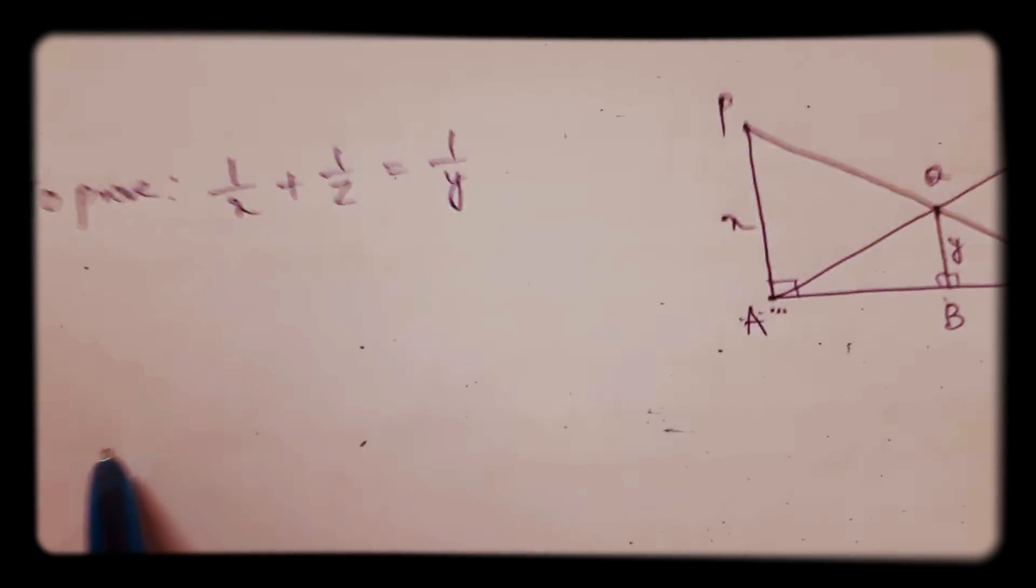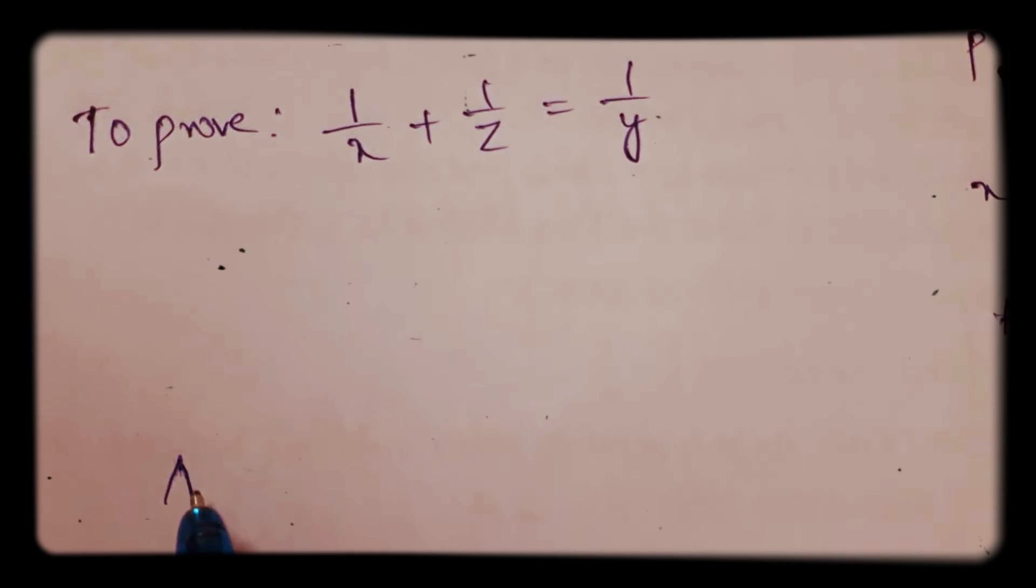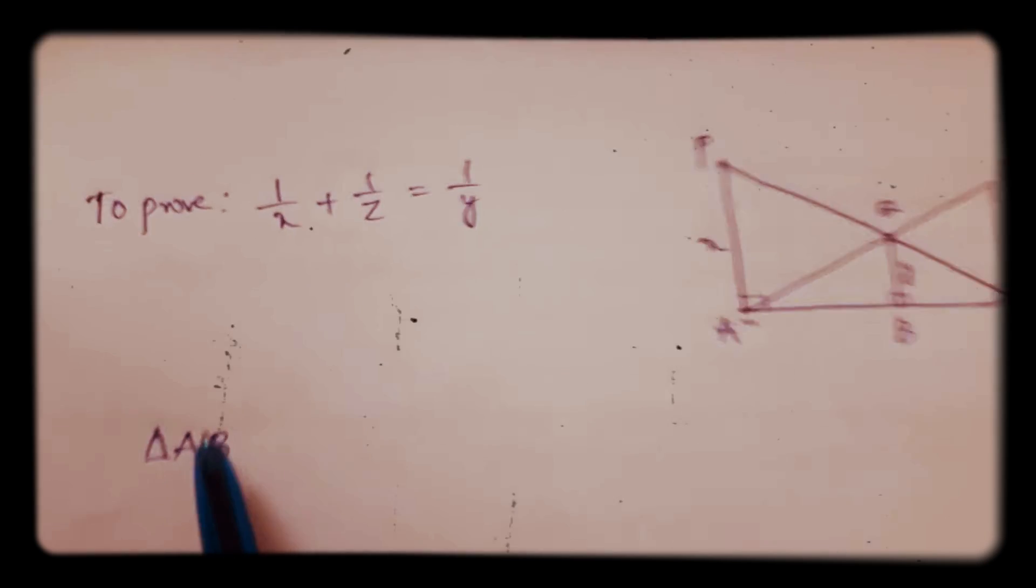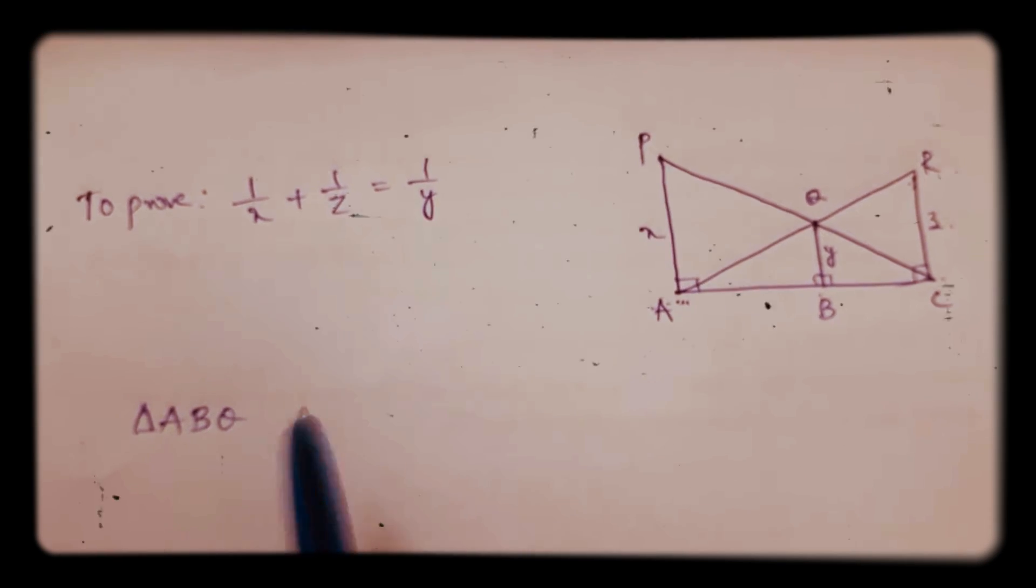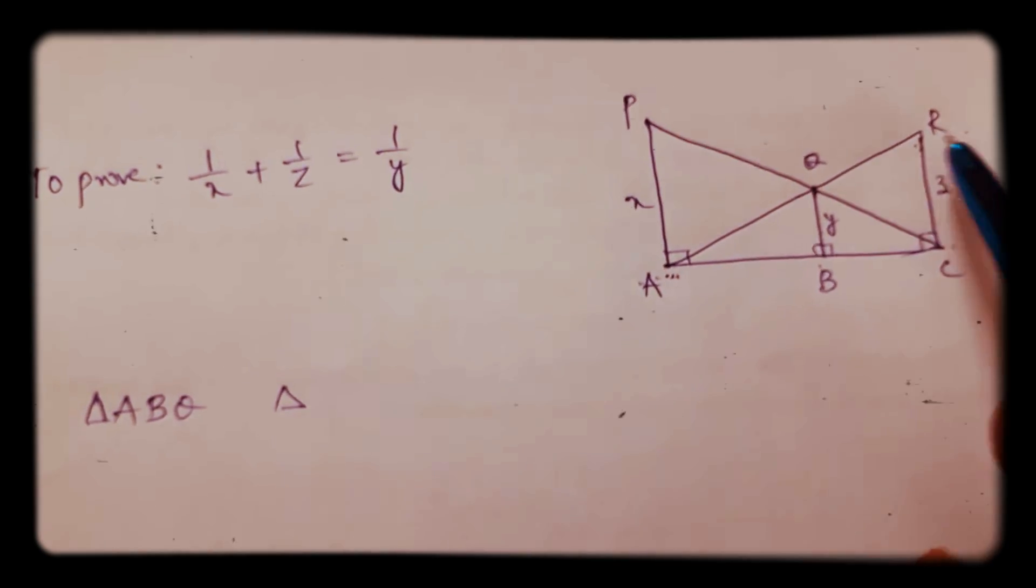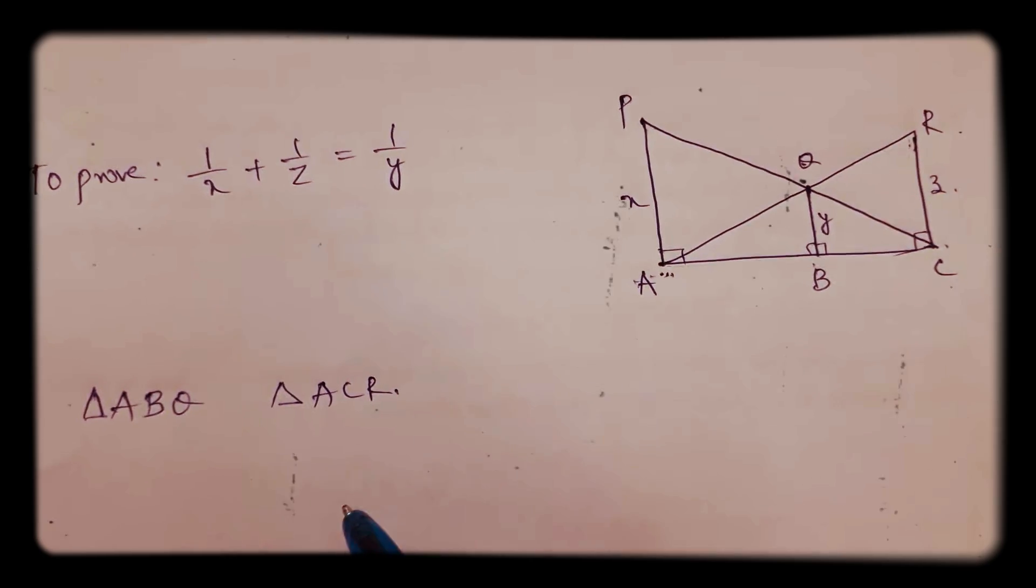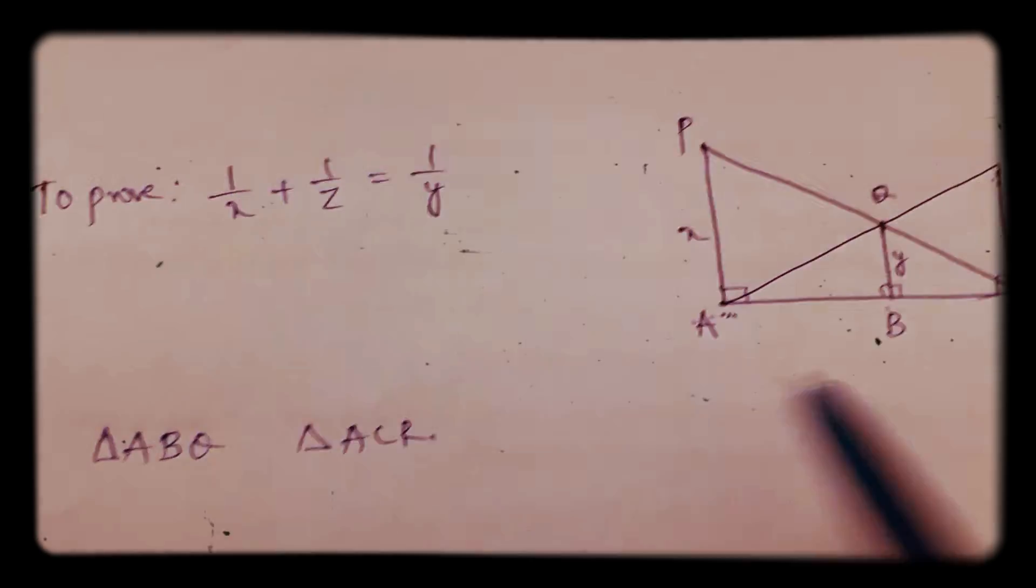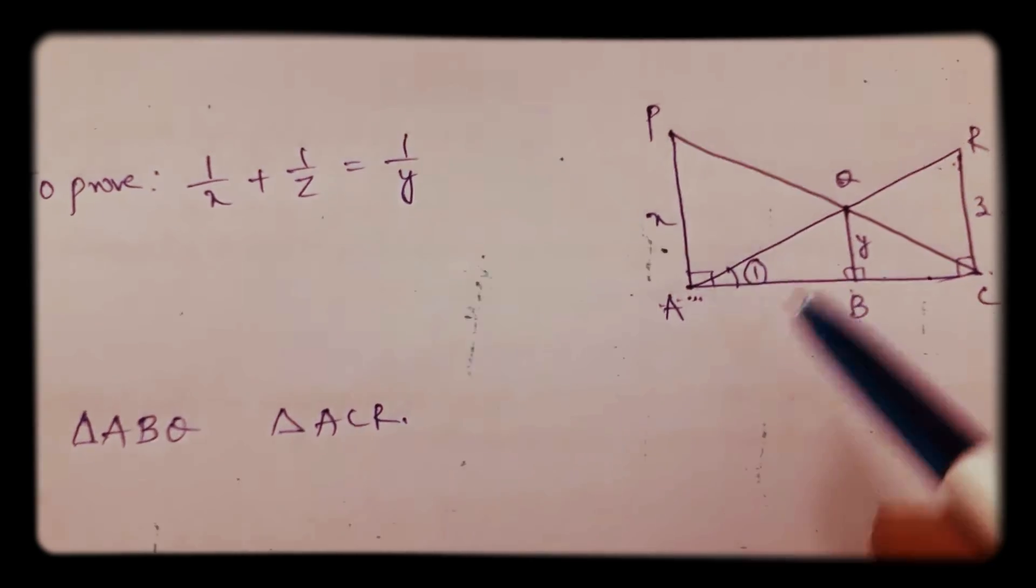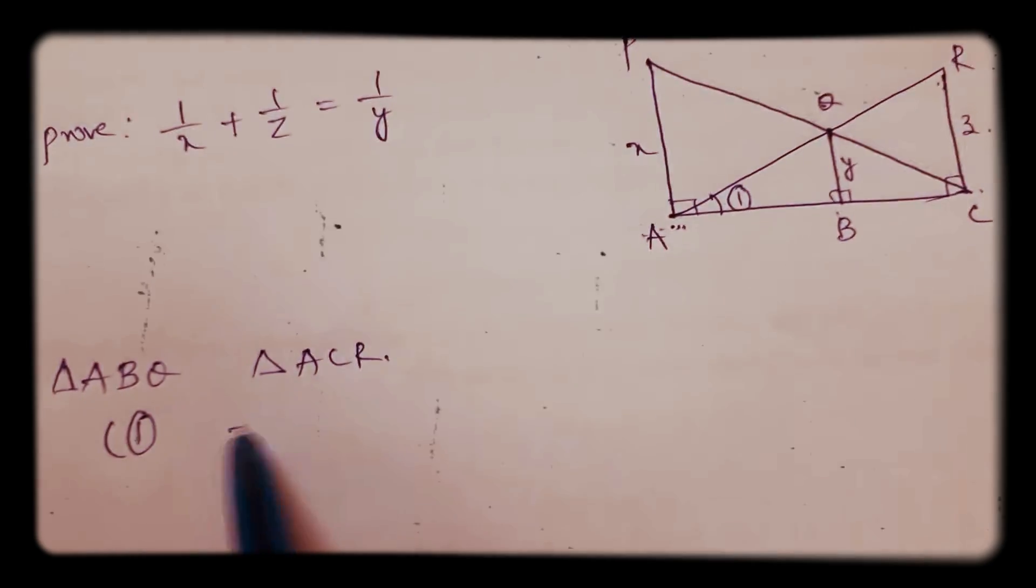Triangle ABQ, start from again, small triangle, big triangle, and triangle ACR. Now in these two triangles, angle 1 is...